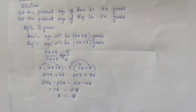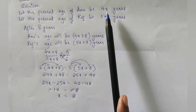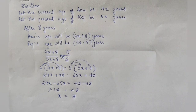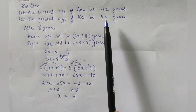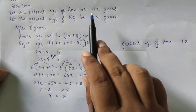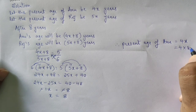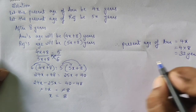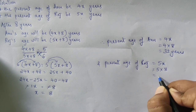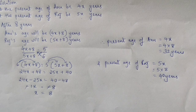Now that we have the value of x, we can find the present ages of Anu and Raj. Anu's present age is 4x = 4 × 8 = 32 years. Raj's present age is 5x = 5 × 8 = 40 years. I hope all of you have understood how to solve this type of age problem. Thank you, students.